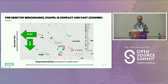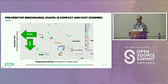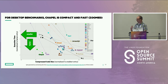When we zoom in to a different scale we can see that down in the bottom left there are a couple of anomalies: Chapel and Julia. Both of these are languages that generate reasonably compact code that's also still reasonably fast. There's room for both to push further in both axes, but this is where things stand today.